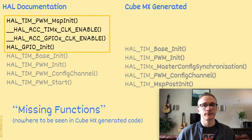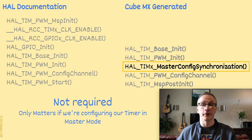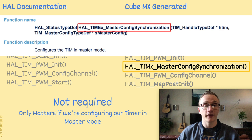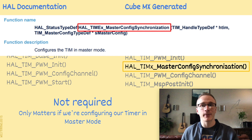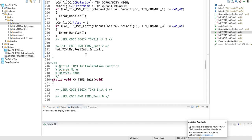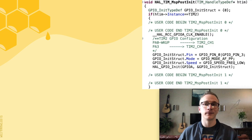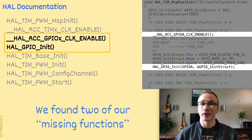Let's take a look at the two functions generated by CubeMX that didn't show up in our HAL instructions. We'll start with master config synchronization — searching the HAL documentation found this excerpt telling us it configures the timer in master mode, which was one of the advanced parameters in CubeMX we didn't mess with. This means unless we're setting up our timer in master mode, we don't actually need this function call. I wanted to look for MSP PostInit — it turns out it doesn't even show up in the HAL documentation. So I held control and clicked on the function, which jumps me to the implementation. After looking at this, two things stood out: the ClockEnable and GPIOInit functions in MSP PostInit are two of those missing functions we looked at earlier. So they weren't missing after all — they were just buried within a different function.